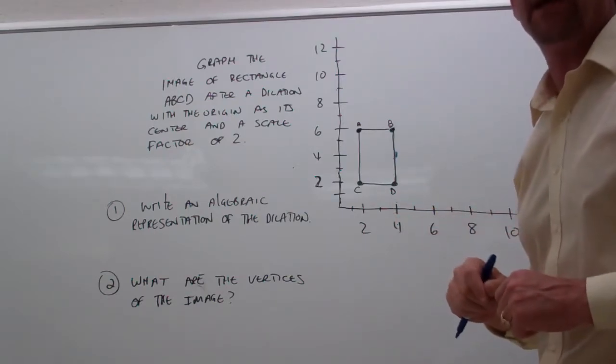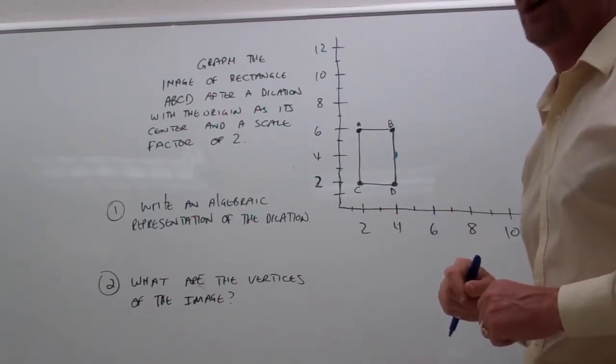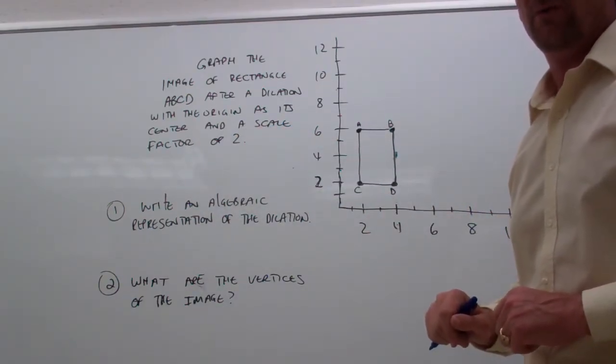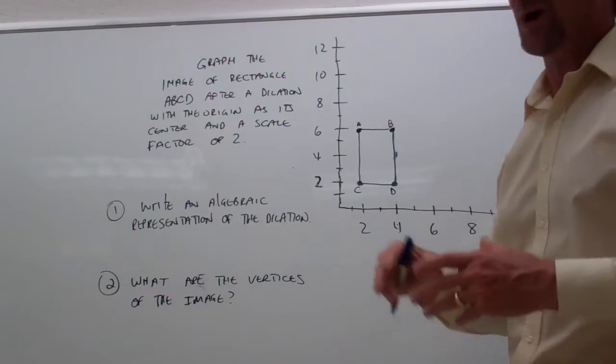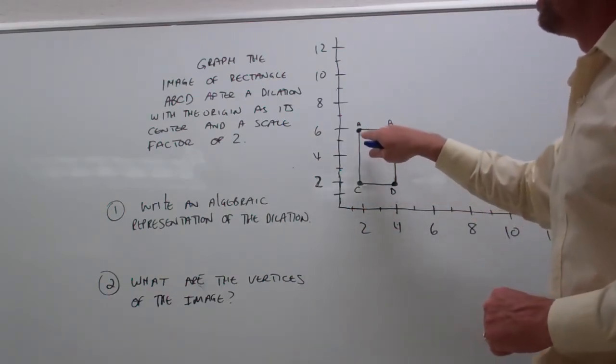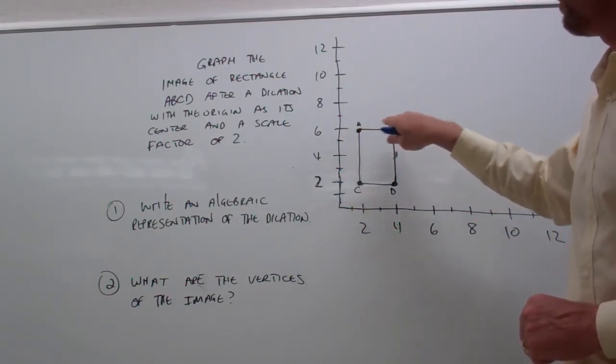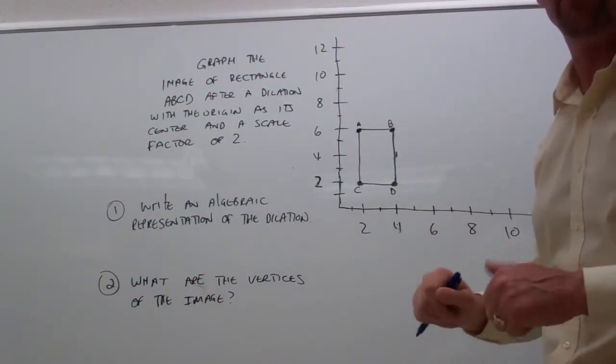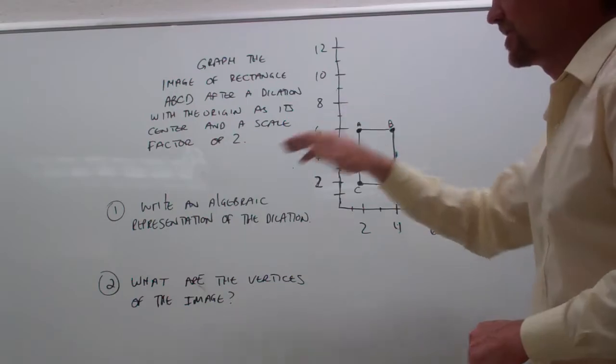Enlargements make things bigger and reductions make things smaller. Now think about it, we have a scale factor of 2, which means we're going to make everything twice as big. So our image of rectangle ABCD should end up being twice the size of the one we have here if we do things just right, because our scale factor is 2.